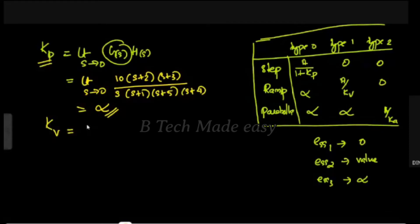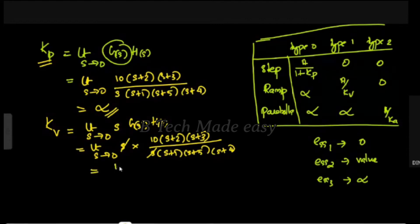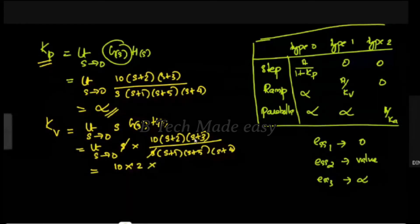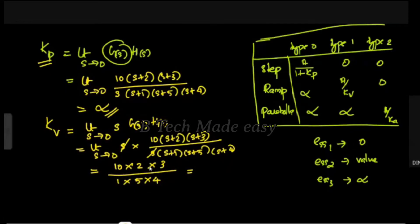Next, Kv equals the limit as s tends to 0 of s·G(s)·H(s). Substituting G(s): limit s→0 of s · 10(s+2)(s+3) / [s(s+1)(s+5)(s+4)]. The s cancels, giving 10×2×3 / (1×5×4) = 60/20 = 3. So Kv = 3.